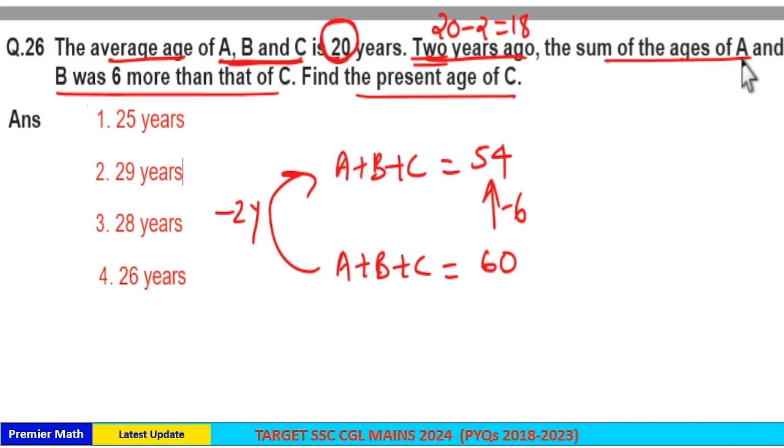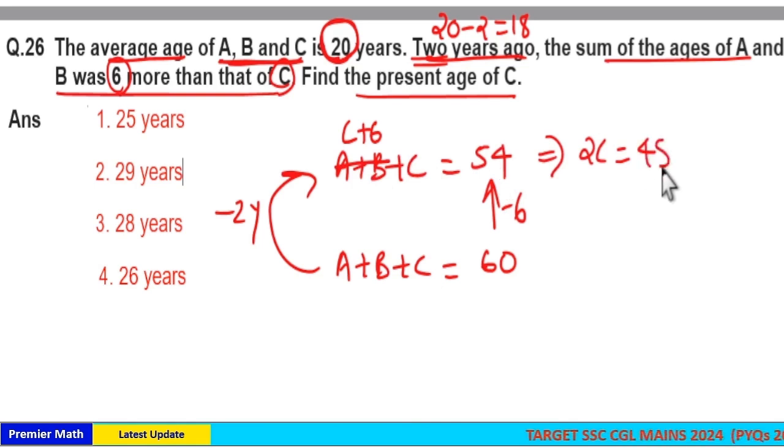And here, 2 years ago, sum of A and B is 6 more than that of C. So, 2C plus 6 is 54 2 years ago. Which means, 2C is equal to 54 minus 6, 48.